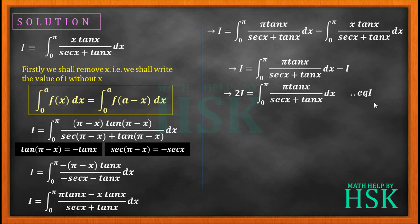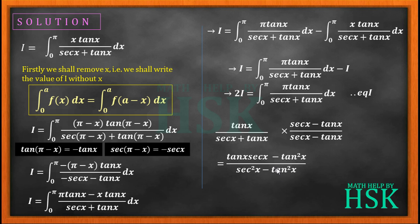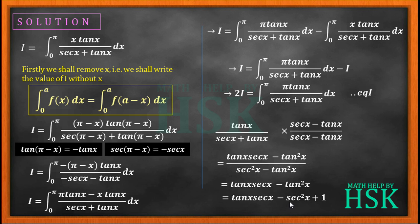Now we shall simplify tan x upon sec x plus tan x. For this we multiply and divide the fraction by sec x minus tan x, which gives tan x into sec x minus tan squared x upon sec squared x minus tan squared x. Now sec squared x minus tan squared x is equal to 1, so we get tan x into sec x minus tan squared x. Since we cannot integrate tan squared x directly, we replace tan squared x with sec squared x minus 1, as we can integrate sec squared x directly. So the final value of the fraction is tan x sec x minus sec squared x plus 1.